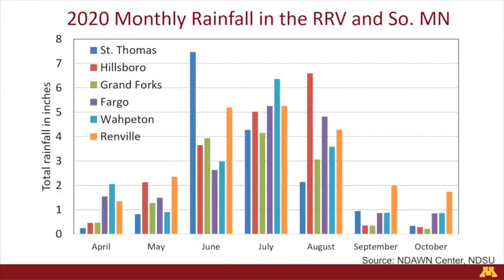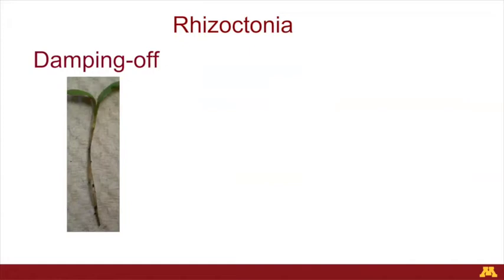Looking at the overall rainfall pattern in 2020, it was very typical for our growing areas. I see more rain in St. Thomas in June, but going into July and August there was a little bit more rain. That could reflect what I've seen in fields in terms of Cercospora. September and October — thank God it was not 2019 — we could get in and get out as quickly as possible to harvest these beets. When it comes to Rhizoctonia, it's a full-season pathogen. From the time we put the seed in the ground, Rhizoctonia gets into action — it causes pre- or post-emergence damping off.